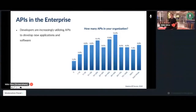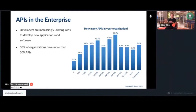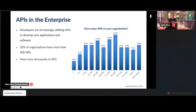The factor to acknowledge is that developers are increasingly utilizing and building APIs to develop their applications. About 50% of the organizations we spoke with are seeing 300 or more APIs existing throughout their architecture. In fact, many — and we've worked with several of these — have thousands and thousands of APIs within the architecture.